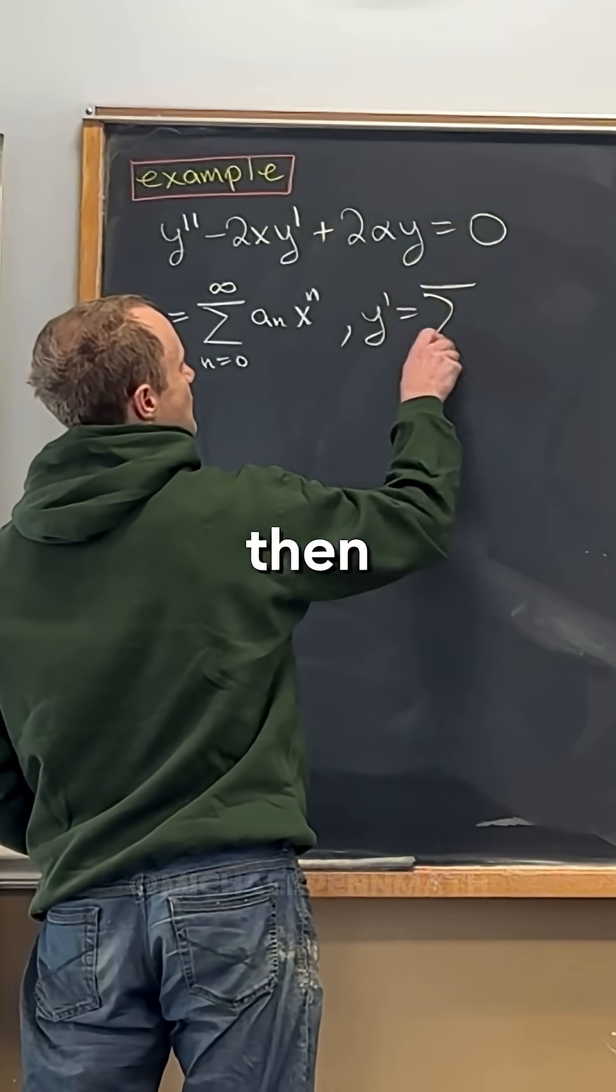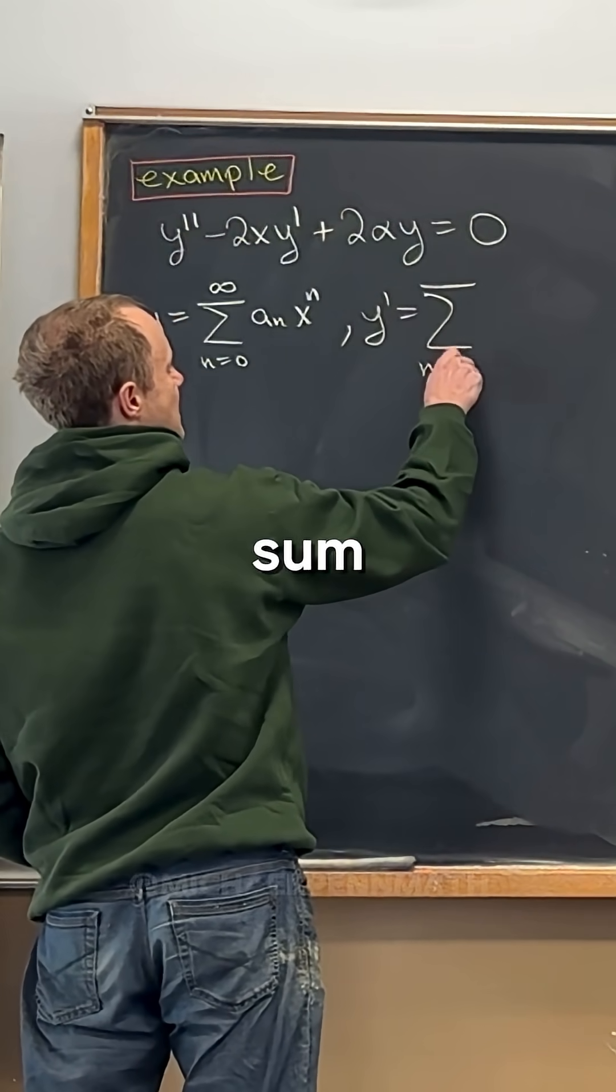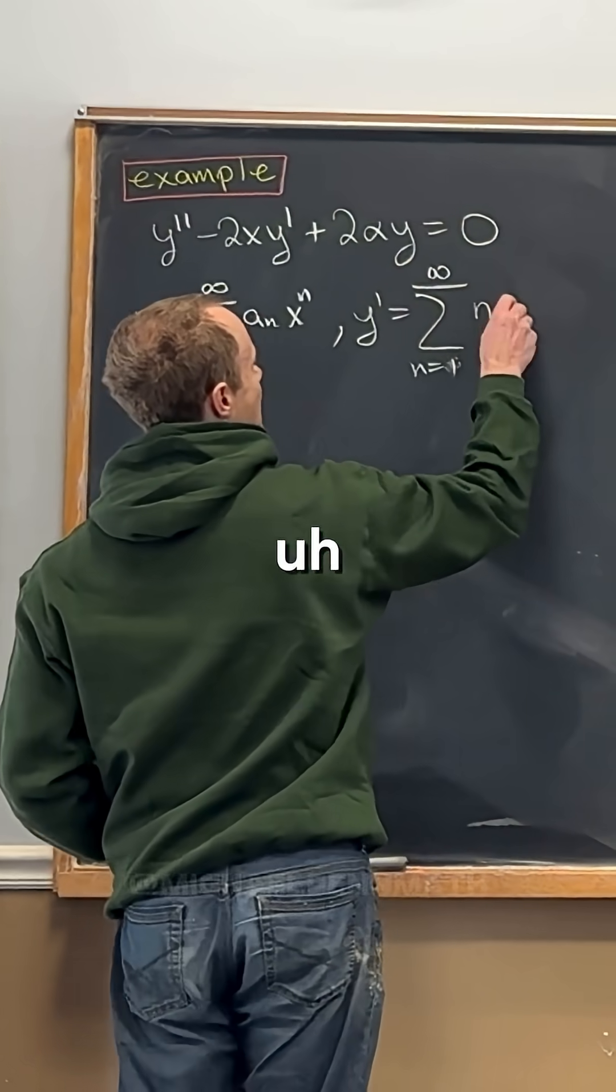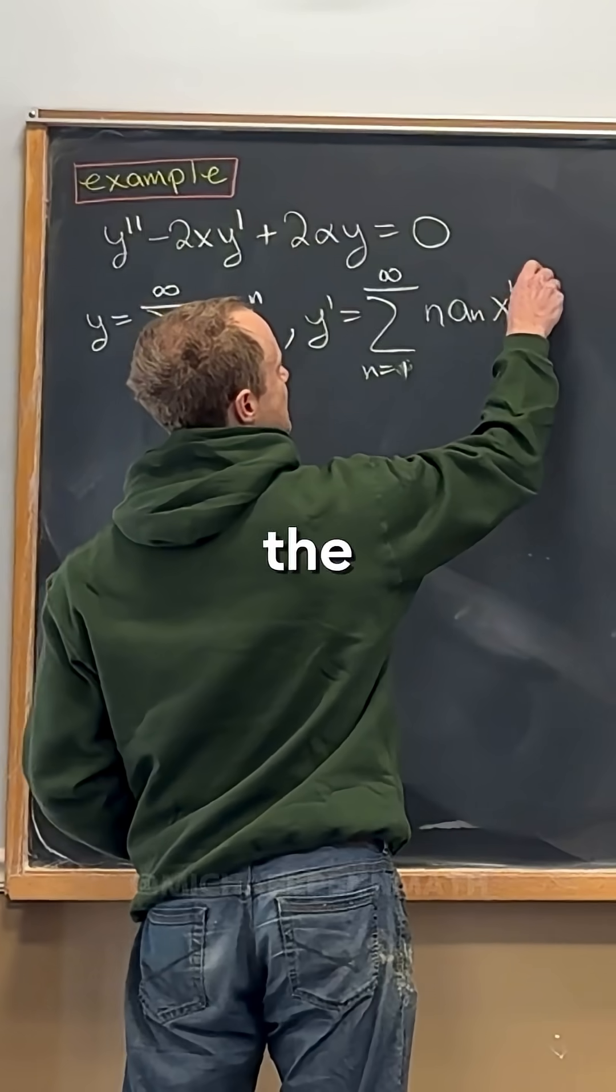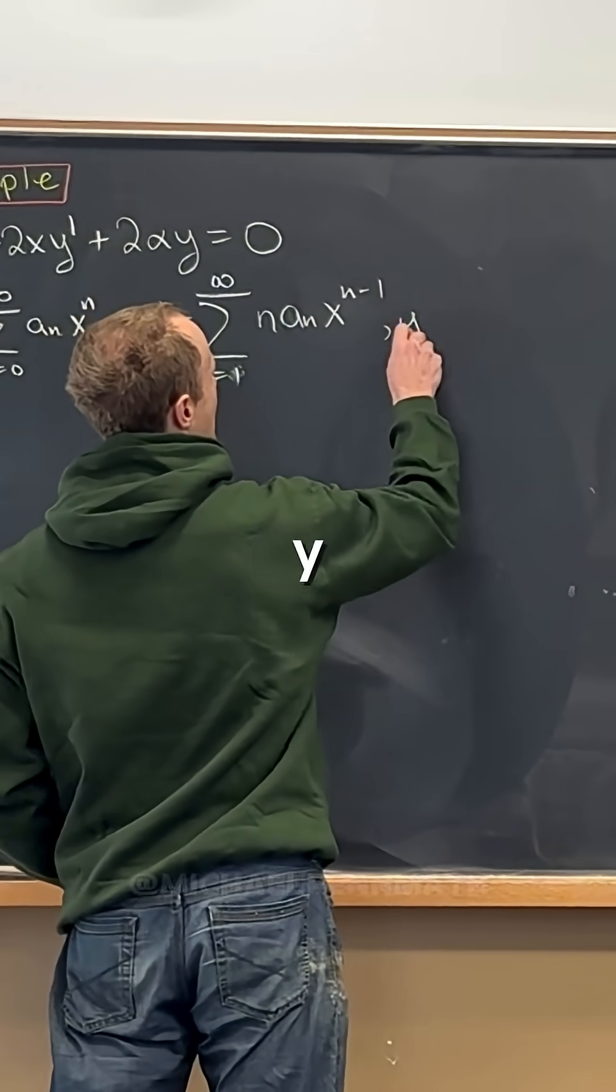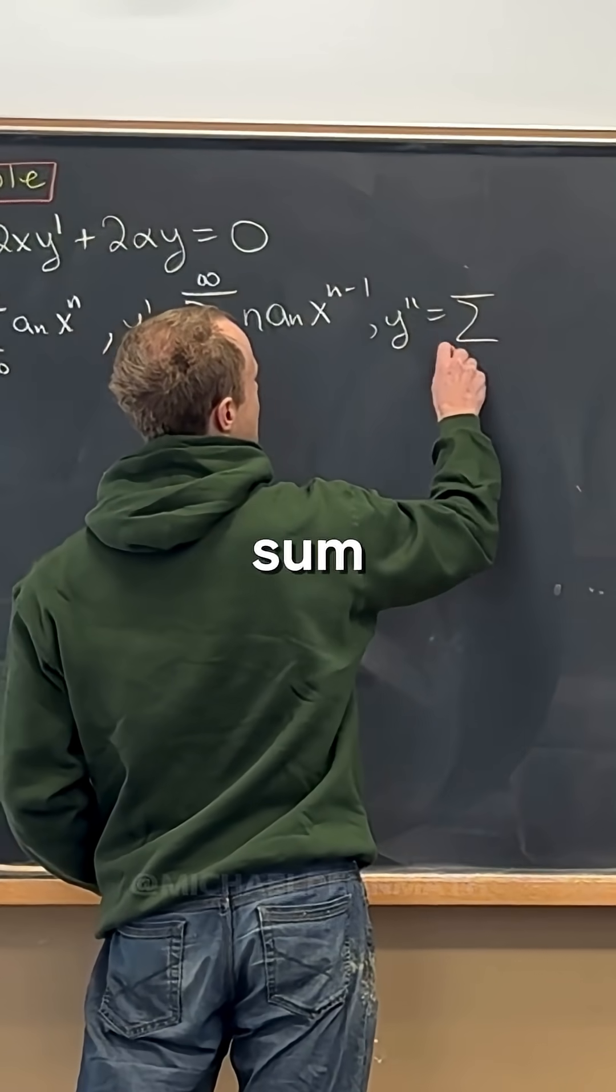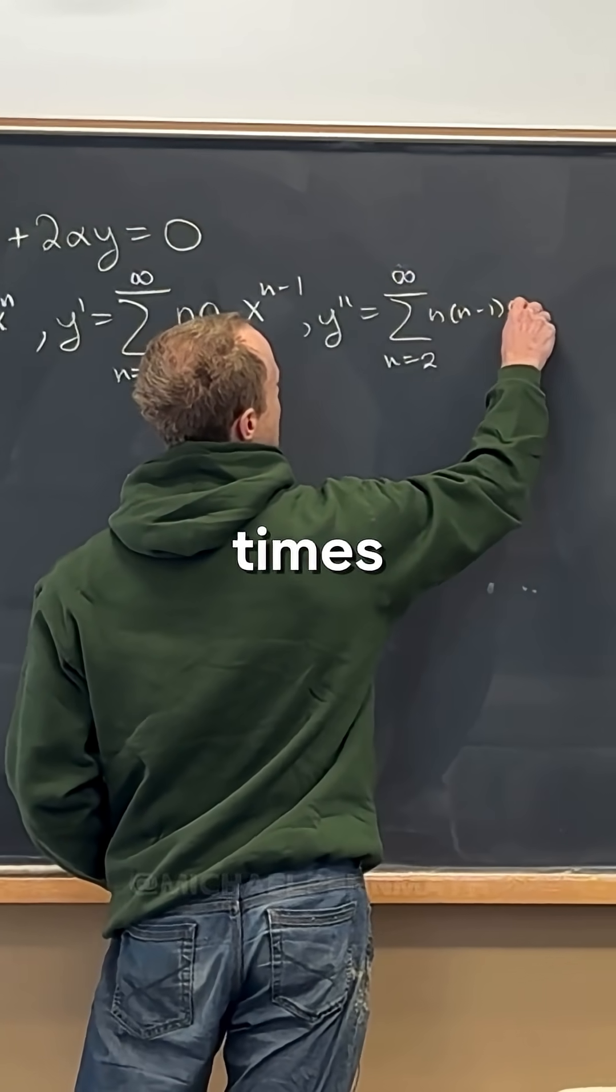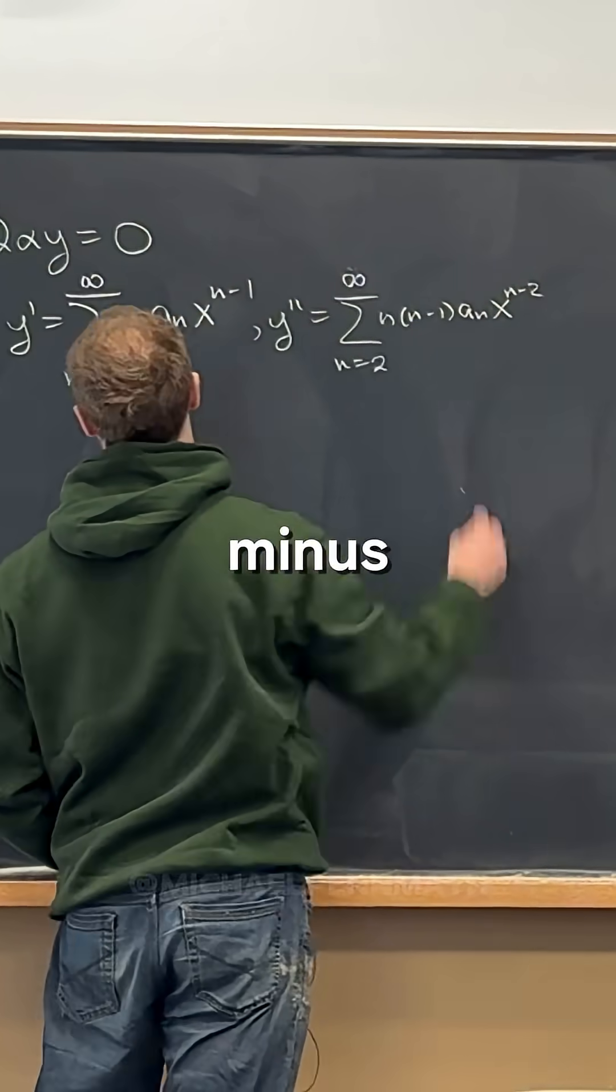And then we have y prime is the sum as n goes from 1 to infinity of n times a sub n times x to the n minus 1, and then we'll have y double prime is the sum as n goes from 2 to infinity of n times n minus 1 times a n times x to the n minus 2.